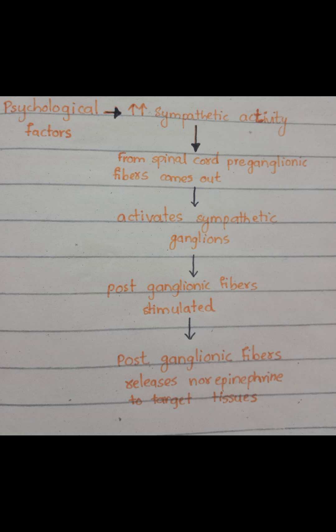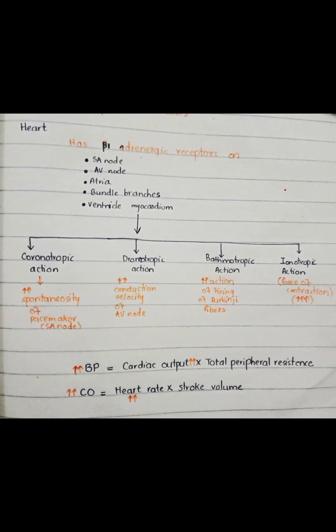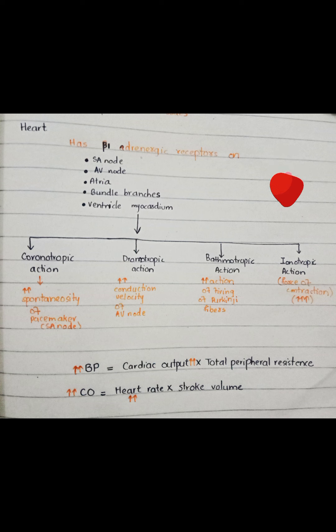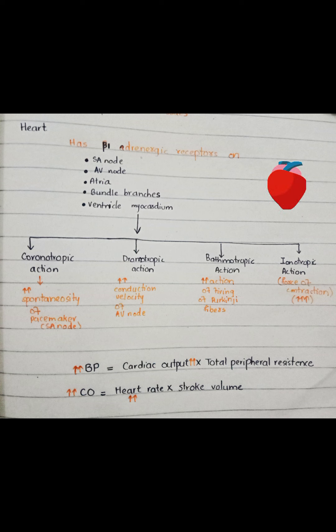Psychological factors increase sympathetic activity, which in turn causes norepinephrine to be released, as shown in this flowchart. Norepinephrine acts on the beta-1 receptor of the heart and causes chronotropic, dromotropic, bathmotropic, and inotropic actions, thereby increasing heart rate.